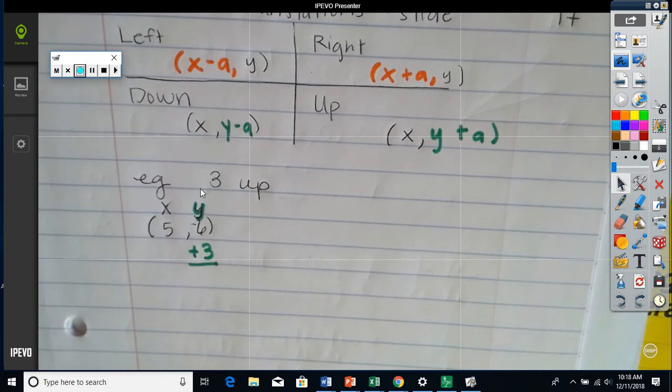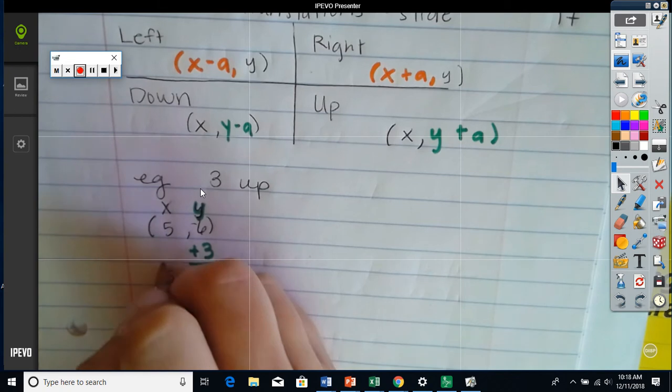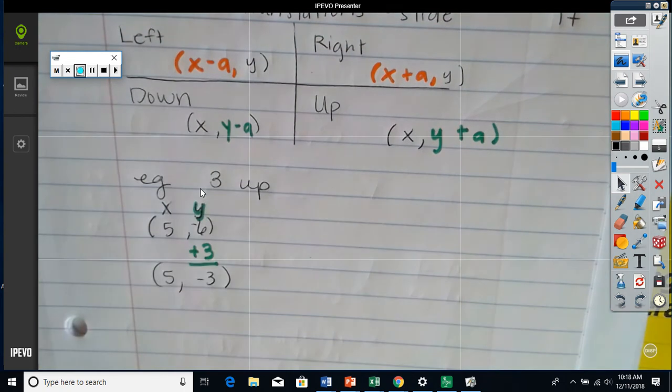Yes, sir. No, negative six plus three. You'll get something different. You did negative three plus six. You're going to get something different. Negative three. The X doesn't change. Alright, that's her answer.